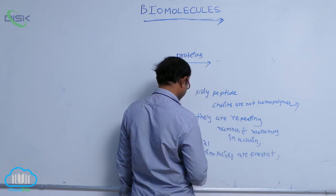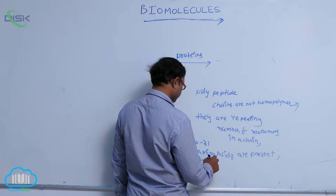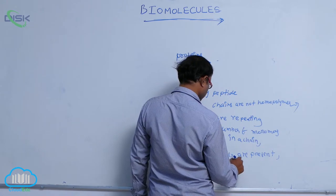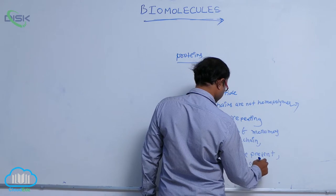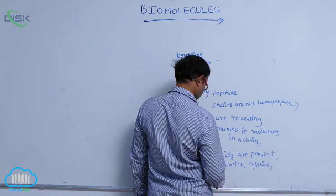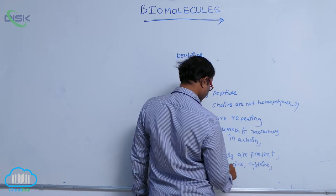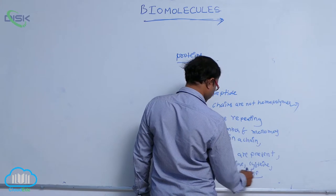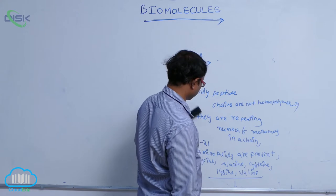Examples of amino acids present in polypeptide chains include glycine, alanine, cysteine, lysine, and valine. These are the different types of amino acids that are present.